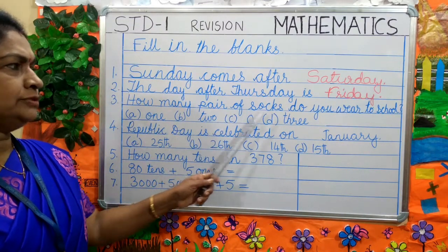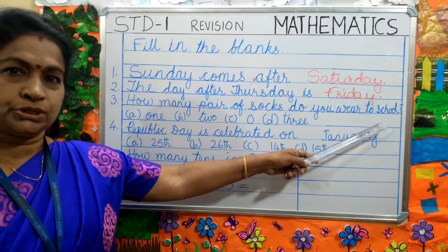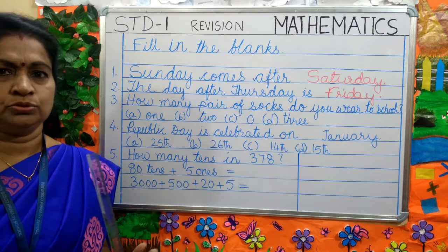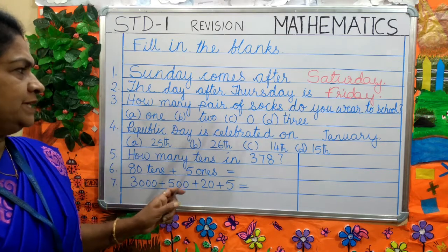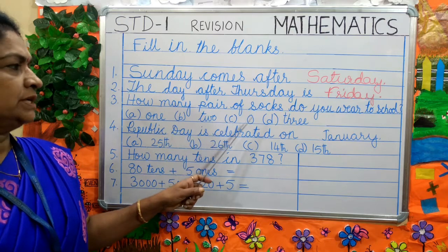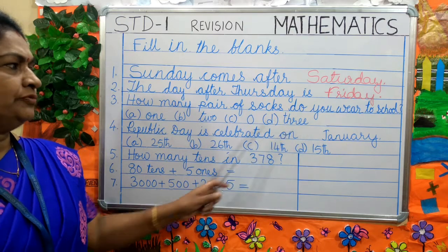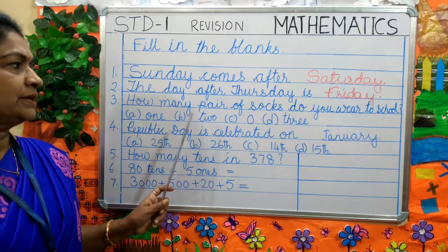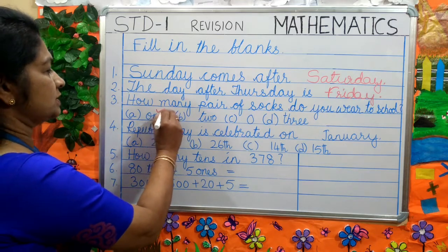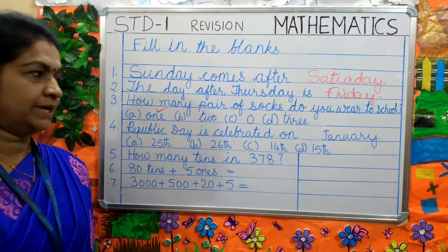Next question: How many pair of socks do you wear to school? One pair is equal to two. The options are: A) 1, B) 2, C) 0, and D) 3. Which is the correct answer? You will be wearing one pair of socks, so the correct answer is 1.